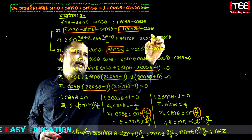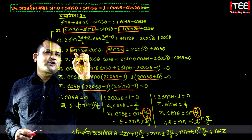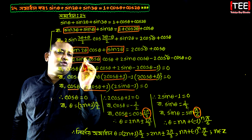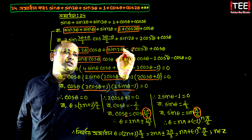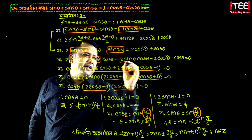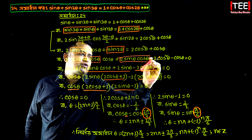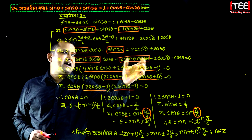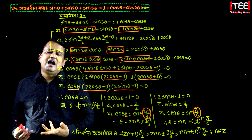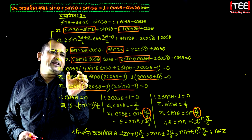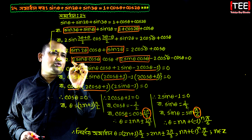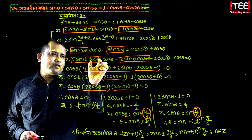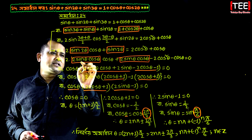We know sin 2 theta is equal to cos theta, and 2 sin theta is equal to cos theta. As you can see, cos theta is equal to 2. 3 theta is equal to cos theta, and the same thing is 5 theta equal to cos theta.